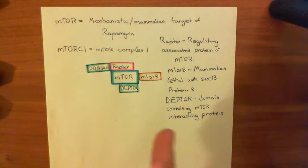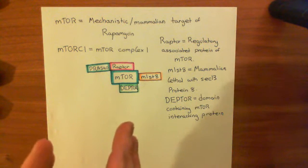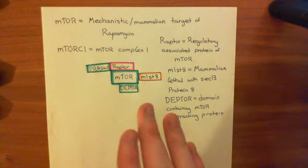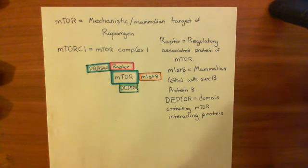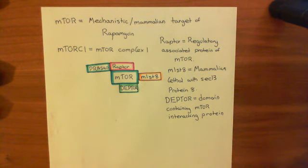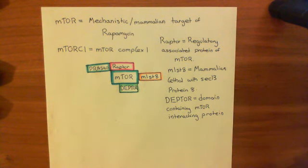The aim of AKT is to try and activate this mTOR complex 1, because this mTOR complex 1 is what's going to cause the cell to divide when it's active. So let's try and see the linking between AKT becoming active and mTOR-1 becoming active.